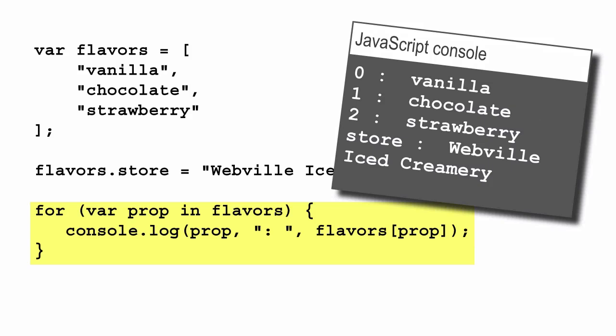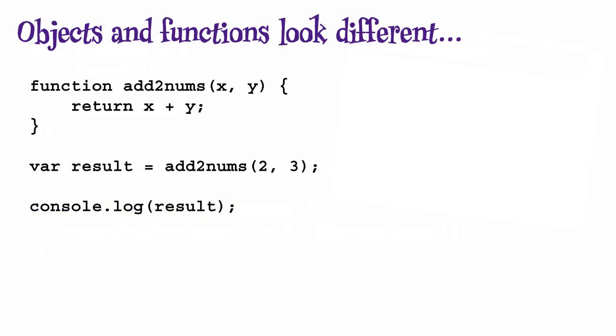Like length and push, and so on, that you can use to work with arrays. So what about functions? Functions seem completely different than objects. A function is bundled up code that you can call and produce a value that's returned to the code that called it. So how on earth is that anything like an object?